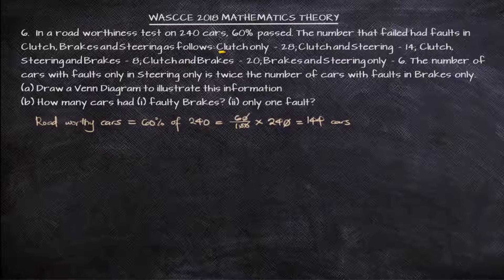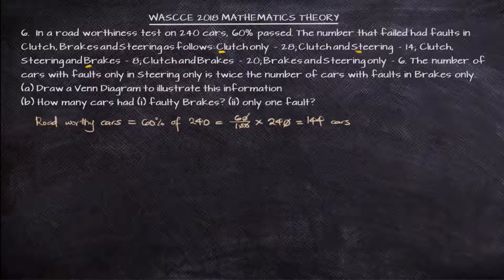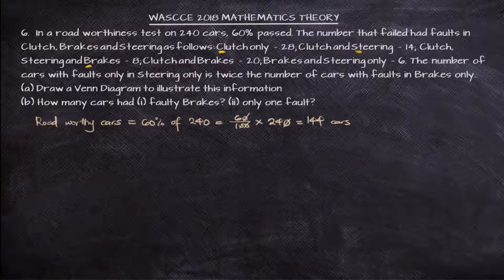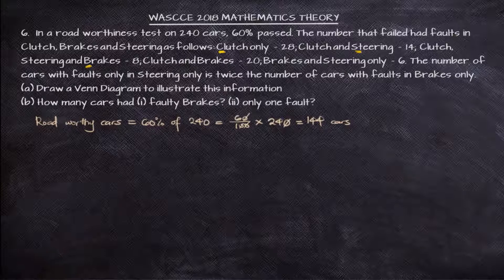If you are to use the first alphabet of the fault, we can use C for clutch, S for steering and B for brakes. Then we can know that the total number of cars, the universal, when it comes to the Venn diagram set theory, the total number of cars, the universal U, we can take that to be 240. We have U is 240.